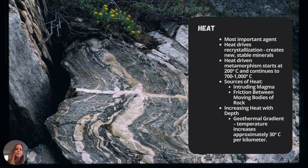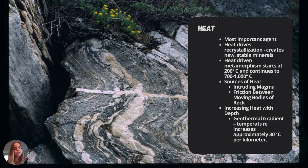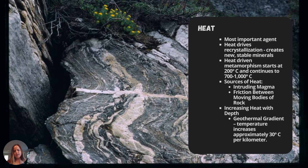The most important agent in this process is heat — it drives recrystallization, making bigger and more stable crystals. Heat here is generally between 200 to 1000 degrees Celsius. Above 1000 degrees, melting starts to occur and we see igneous formation. Sources of heat include upwelling magma, which is very hot, and friction between rock bodies. When plate tectonics occurs, plates pushing together or sliding past each other generate heat from friction.